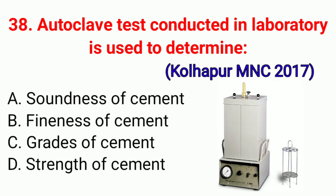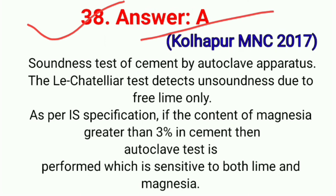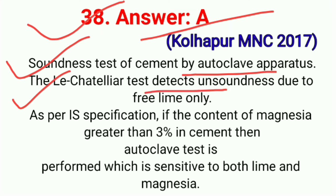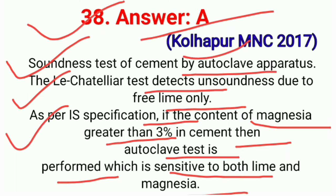Question No. 38. Autoclave test conducted in laboratory is used to determine. This question is asked in exam Kohlapur MNC 2017. Correct option A: Soundness of cement. Soundness test of cement by Autoclave apparatus — the Le Chatelier test detects unsoundness due to free lime only. As per IS specification, if the content of magnesia is greater than 3% in cement, then Autoclave test is performed, which is sensitive to both lime and magnesia. Correct option A.